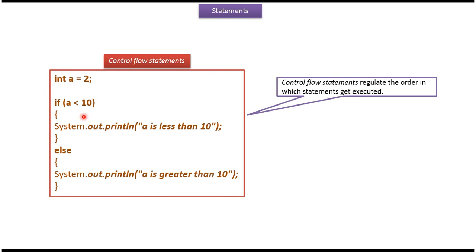Here you can see the example of control flow statement. If a less than 10, then this statement will be executed, else this statement will be executed. Control flow statements regulate the order in which statements get executed.